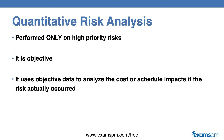For example, if this risk were to actually occur, the impact would be we will be $40,000 behind schedule. So we're actually putting a numeric term behind it. This will allow us to see how much reserve we need in our contingency reserve in order to cover this risk if it were to occur.